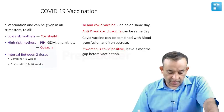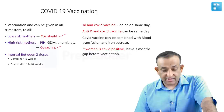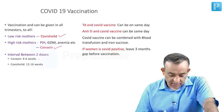For low-risk mothers we give the Covishield, and for high-risk mothers — like those with PIH, GDM, and anemia — we give Covaxin. The interval for Covaxin is lesser: one month is enough, whereas Covishield requires three months.